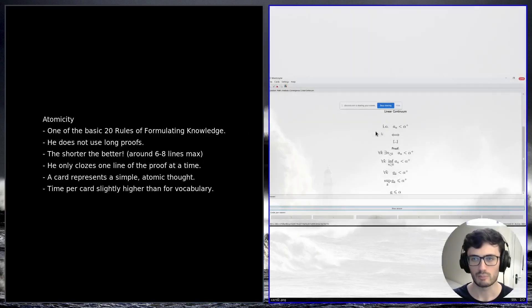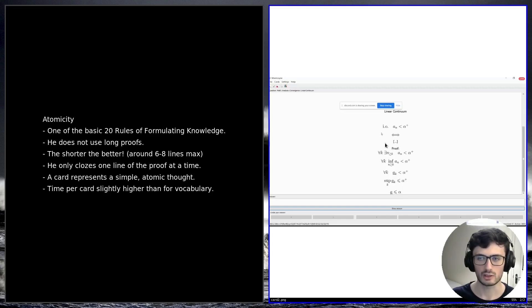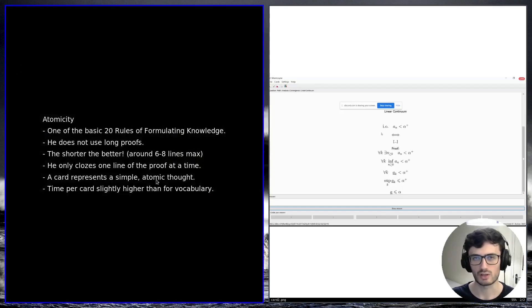To give you an example, Paul does not use long proofs. They tended to be around six to eight lines maximum, and in each close card, for example, he would only close one line of the proof, which represents a simple atomic thought.